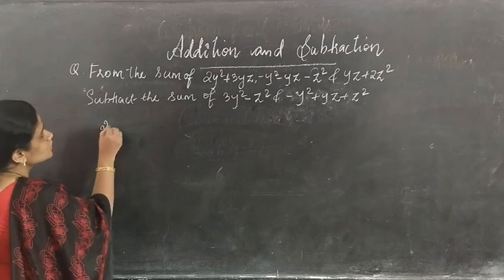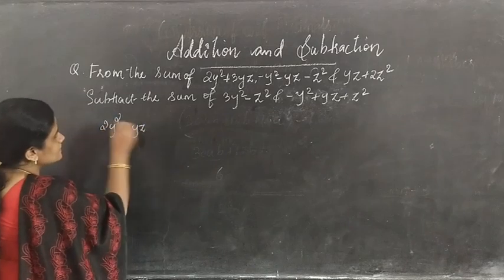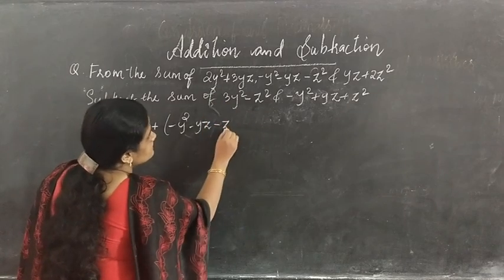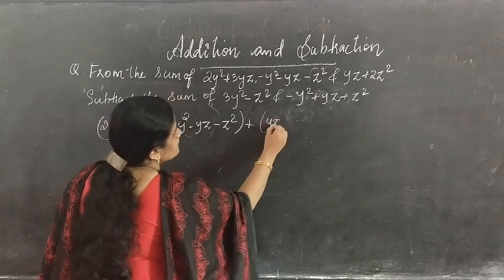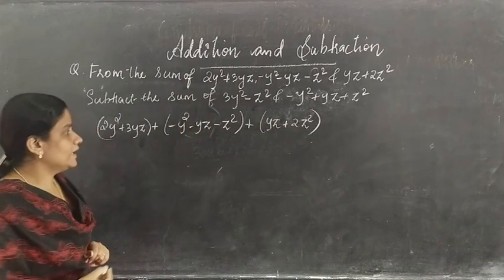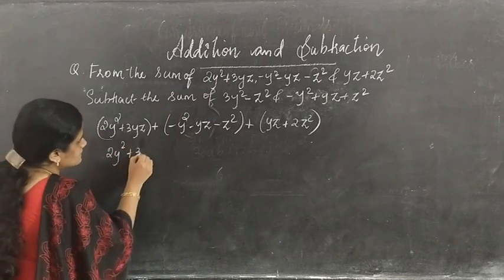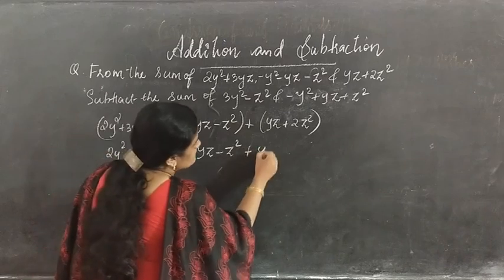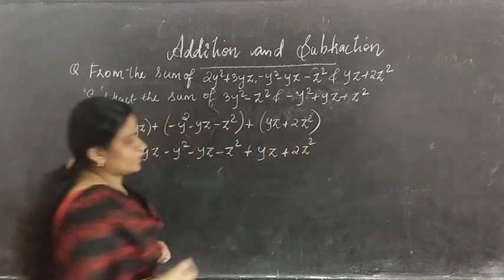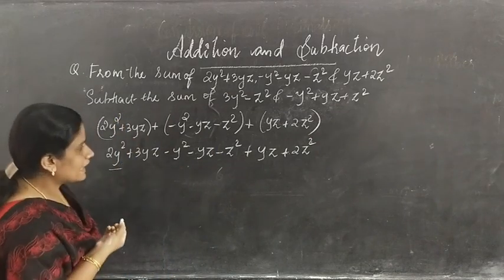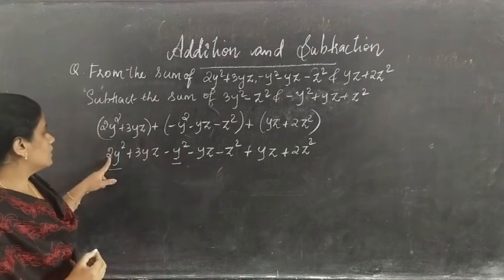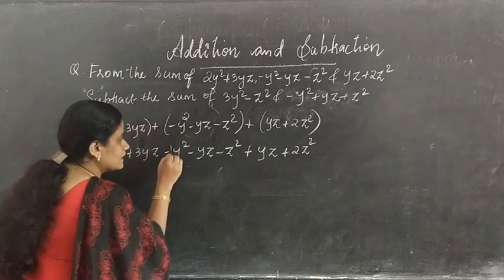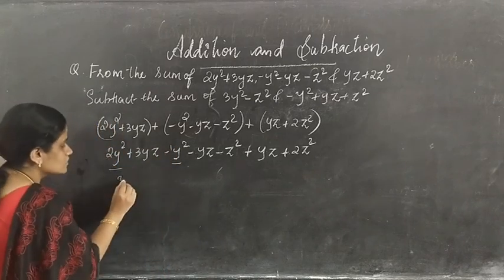First sum: 2y² plus 3yz plus negative y² minus yz minus z², plus yz plus 2z². Opening the bracket: 2y² plus 3yz minus y² minus yz minus z² plus yz plus 2z². For y²: coefficient 2 minus 1 gives y². For yz: 3yz minus yz plus yz — that is 3yz.